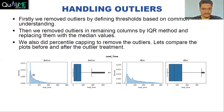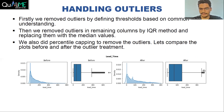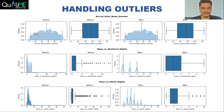After we treated the outlier, the lead time distribution became smoother. If we look at the box plot, many outliers were present; after treatment, only a few outliers remain. These are the comparisons of remaining features — distribution and box plots before and after treating the outliers.